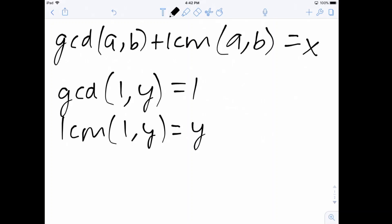And these we can easily show using properties of GCD and LCM. So if I were to let A equal one, then the equation becomes GCD of one comma B plus LCM of one comma B equals x. From this, we get 1 plus B equals x.